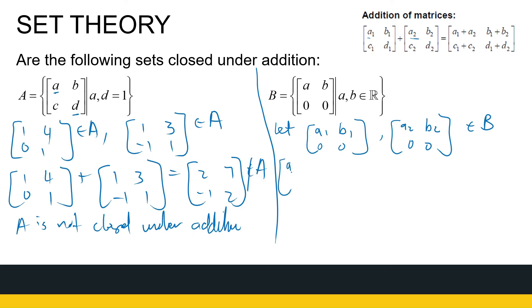And I add them together, [a1, b1; 0, 0] plus [a2, b2; 0, 0]. So I get [a1 plus a2, b1 plus b2; 0, 0]. So that again is an element of B.